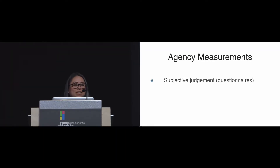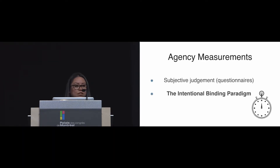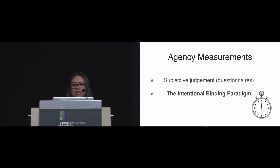There is a lot of research on agency saying that explicit judgment of agency is subject to a lot of cognitive biases, because normally the way in which we think that we are deciding is different from the way that the brain actually decides for us. For these reasons, quantitative measures have also been proposed. One example is the intentional binding paradigm, which links agency experience and perception of time.